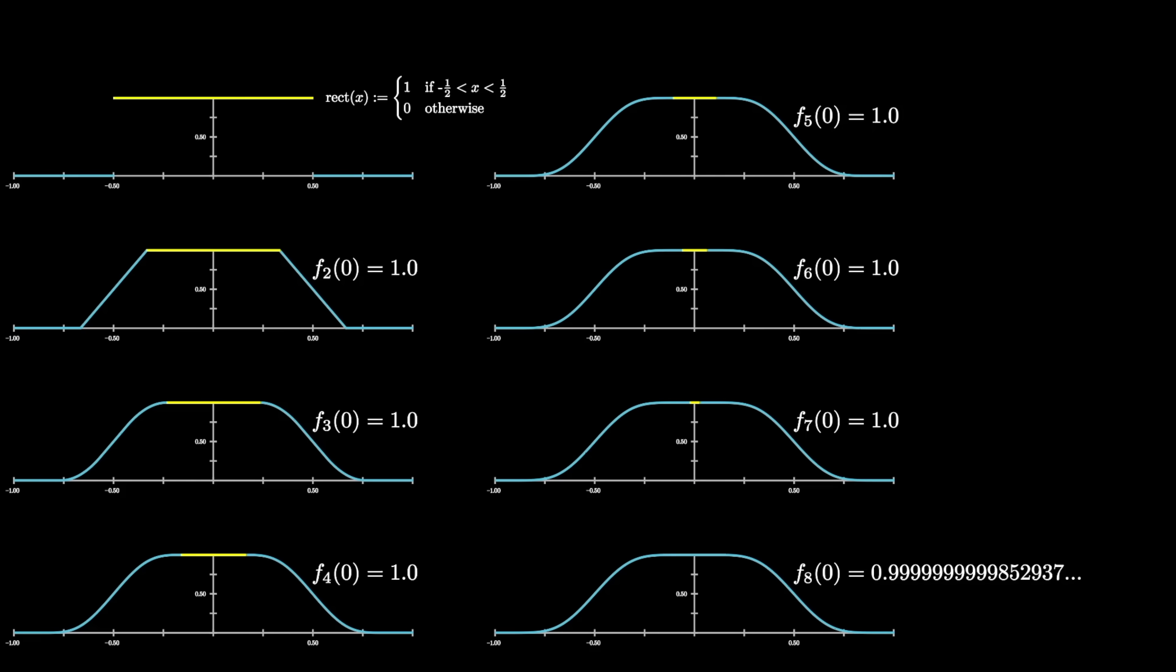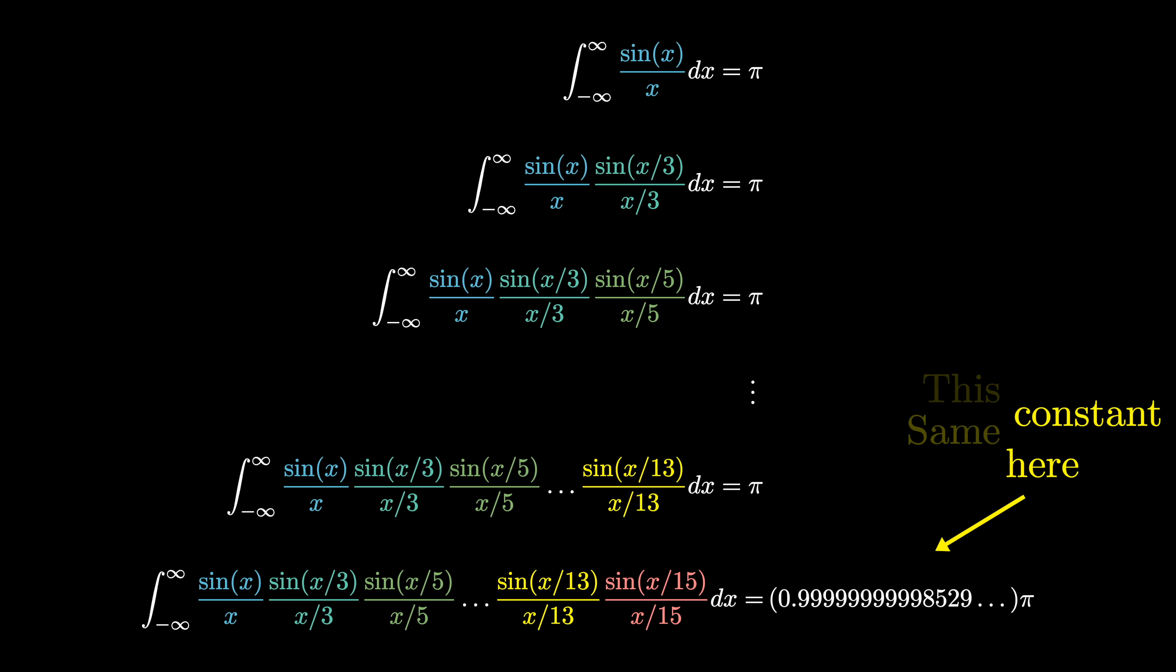And as it happens, this constant from our moving average process that's ever so slightly smaller than 1 is exactly the factor that sits in front of pi in our series of integrals. So the two situations aren't just qualitatively similar, they're quantitatively the same as well.